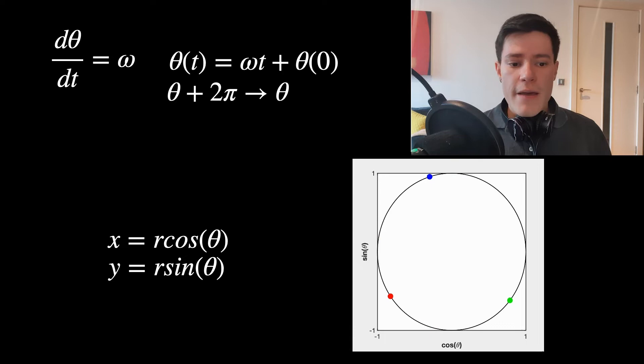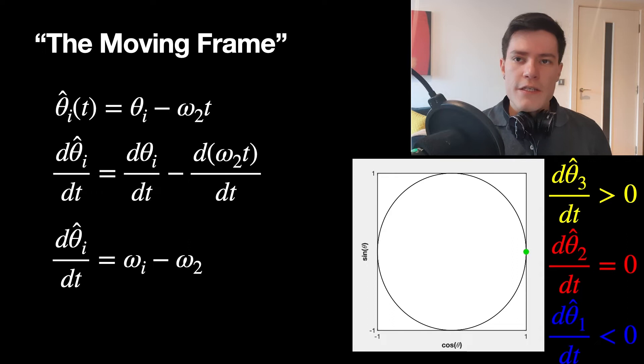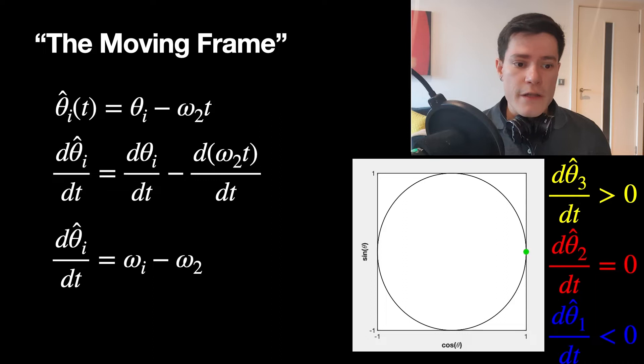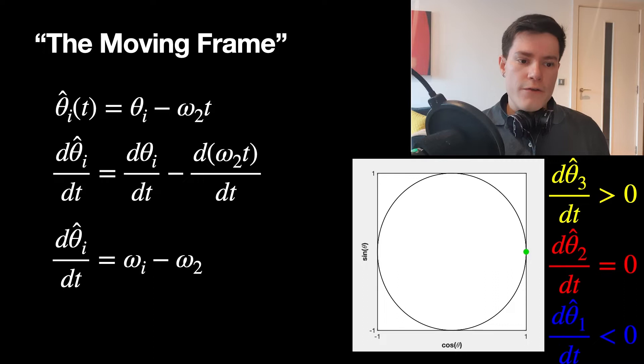What we can do is essentially subtract the influence of one of the oscillators by imagining that we are following it — like an ant living on the intermediate speed oscillator. In that frame, you don't see that second oscillator move, but you do see faster oscillators move away or slower oscillators move away in the backwards direction.